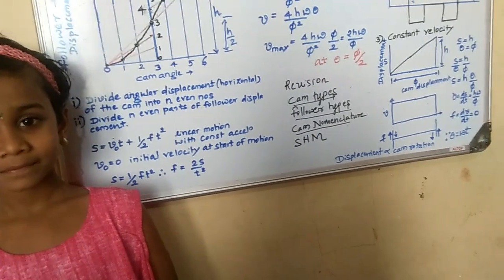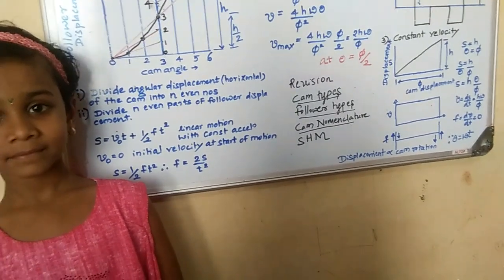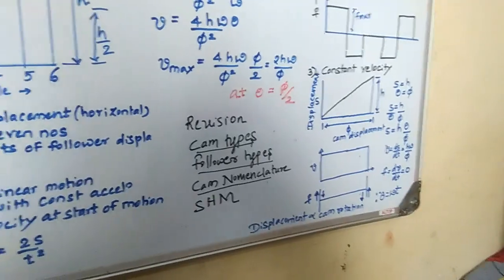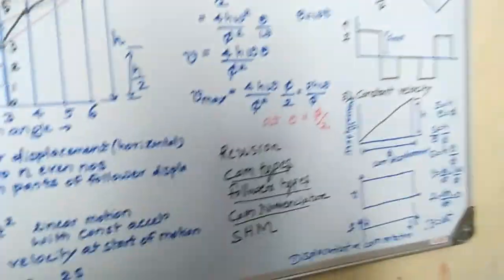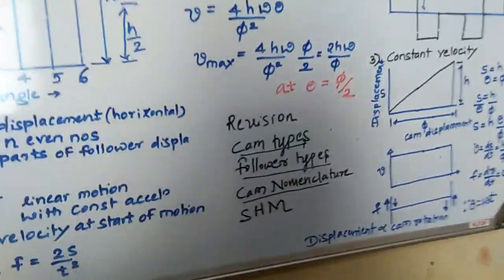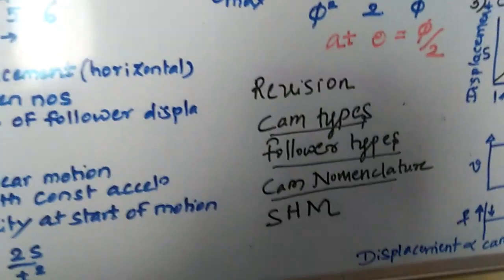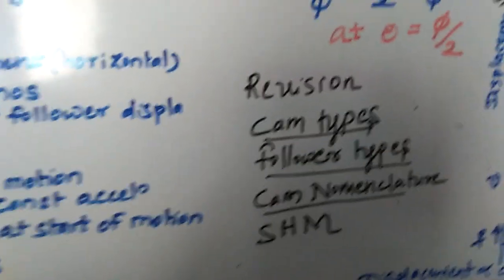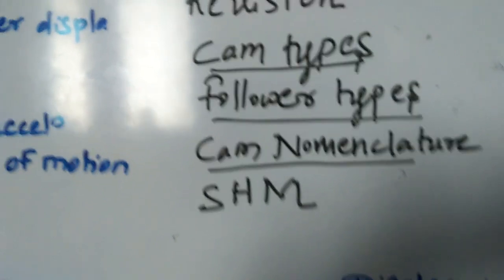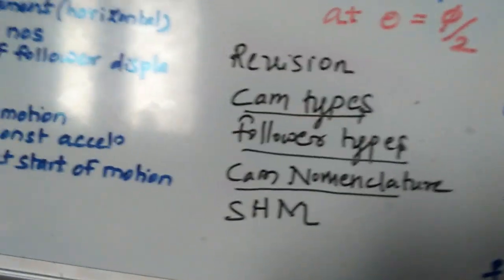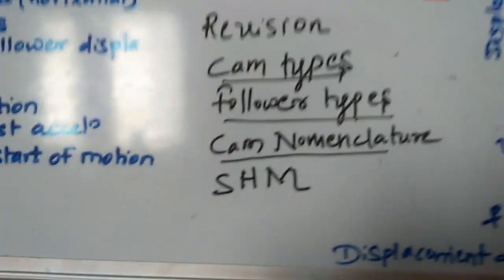I will go to the next topic. Whatever I explained in the previous videos is a revision. I will take it as a revision. That includes cam type, follower type, cam nomenclature, and SHM. I have completed up to this much.